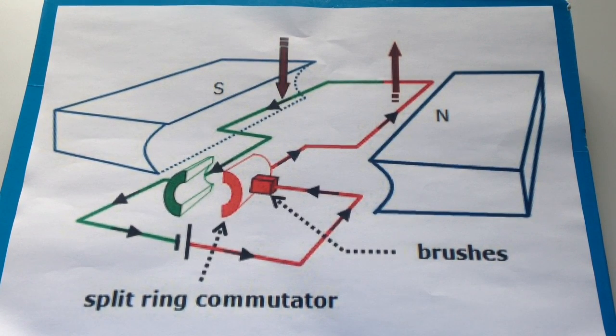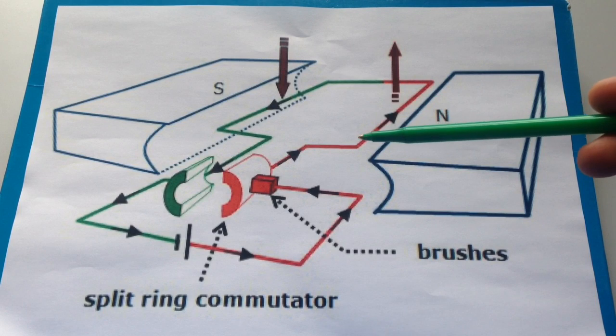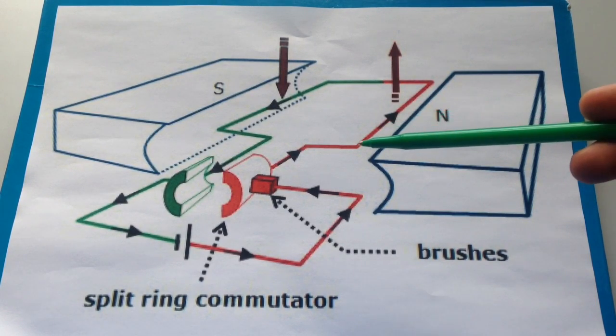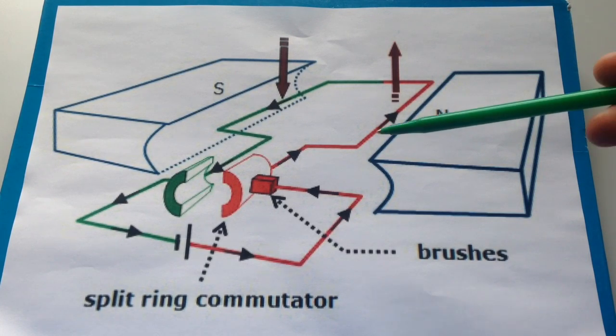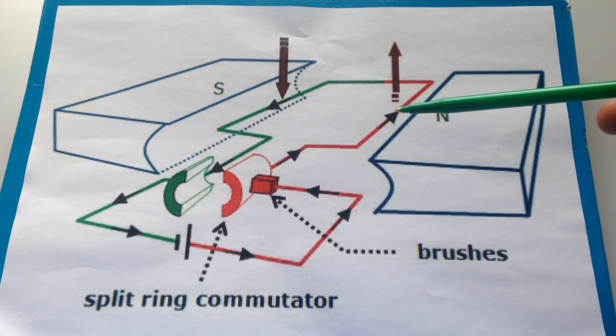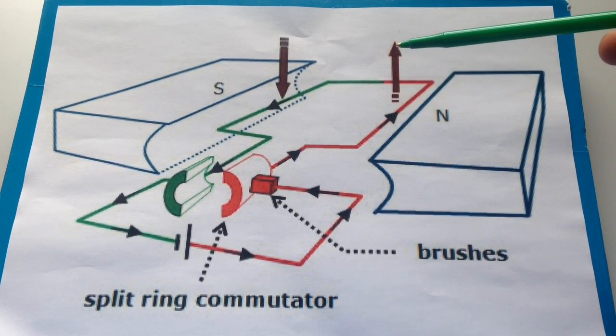All right, so what does a split ring commutator do? So first, let's just have a look at the motor. We can see that on the right-hand side at the moment, the current is moving away from us. The magnetic field is moving from north to south. So you at home should check Fleming's left-hand rule. And if you do that, you'll see that this side of the motor will be forced upwards.